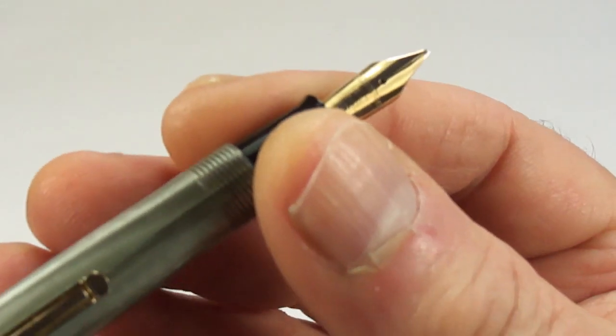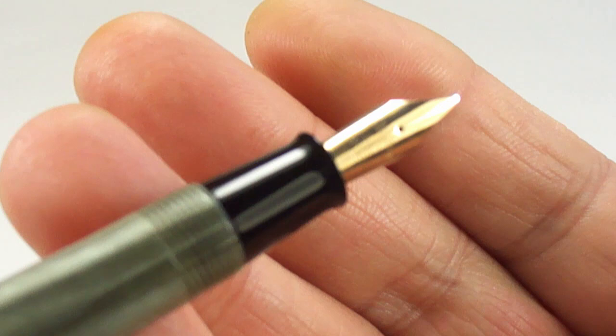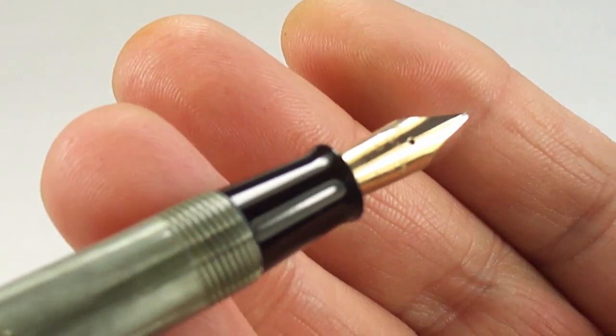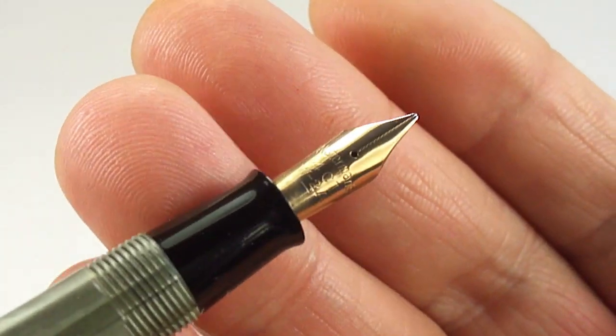Let's take you up to the section. You can see quite a small section, a slight lip towards the nib there.